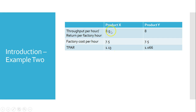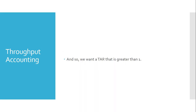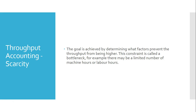The TPAR doesn't necessarily tell us which product to make first — we found that when we ranked by throughput per factory hour. But it tells us whether we should be making the product at all. It's very possible both returns could have been less than 7.5. We could still rank them, but overall it would be costing more to make them. The point is to aim to make more throughput than the cost of running the factory, ensuring a ratio greater than one.